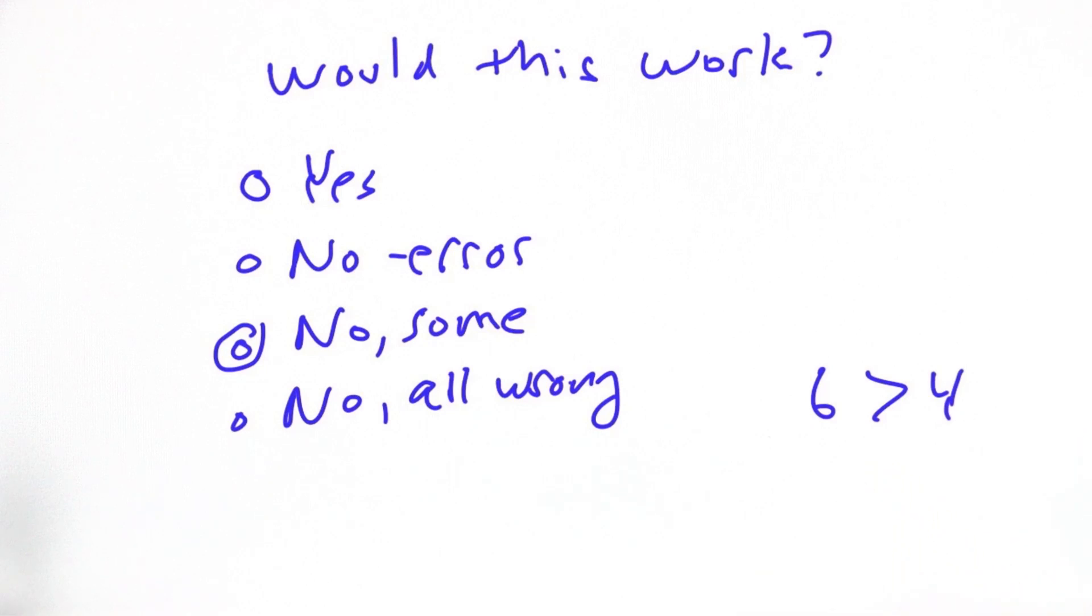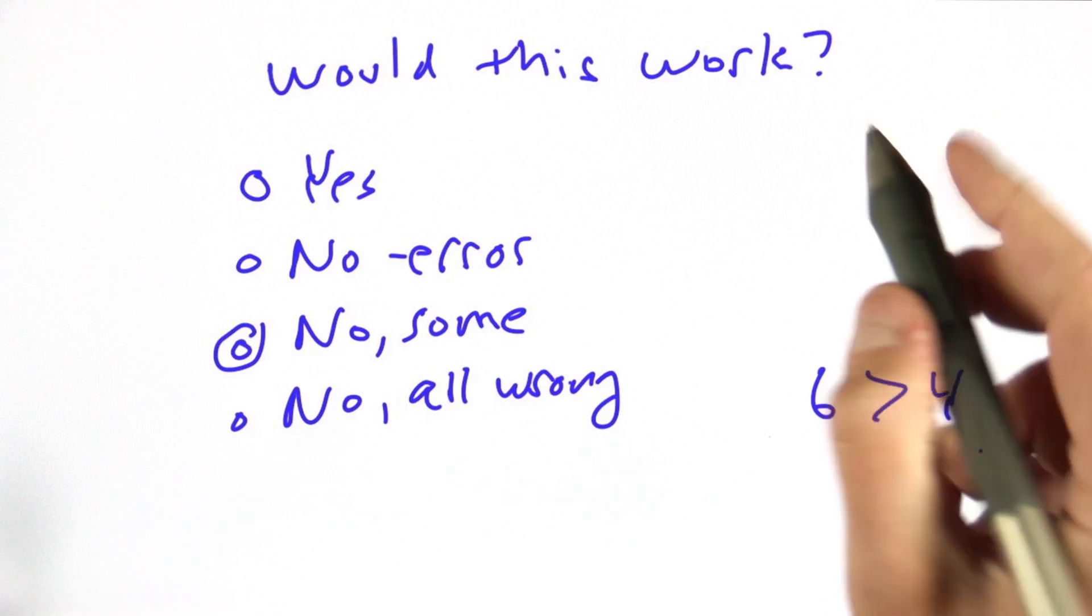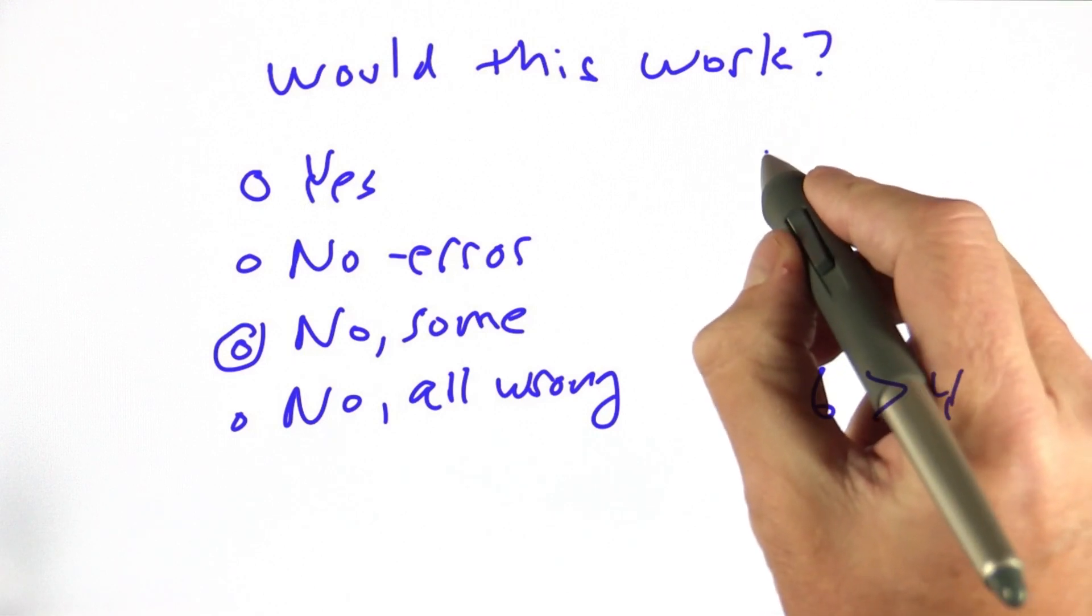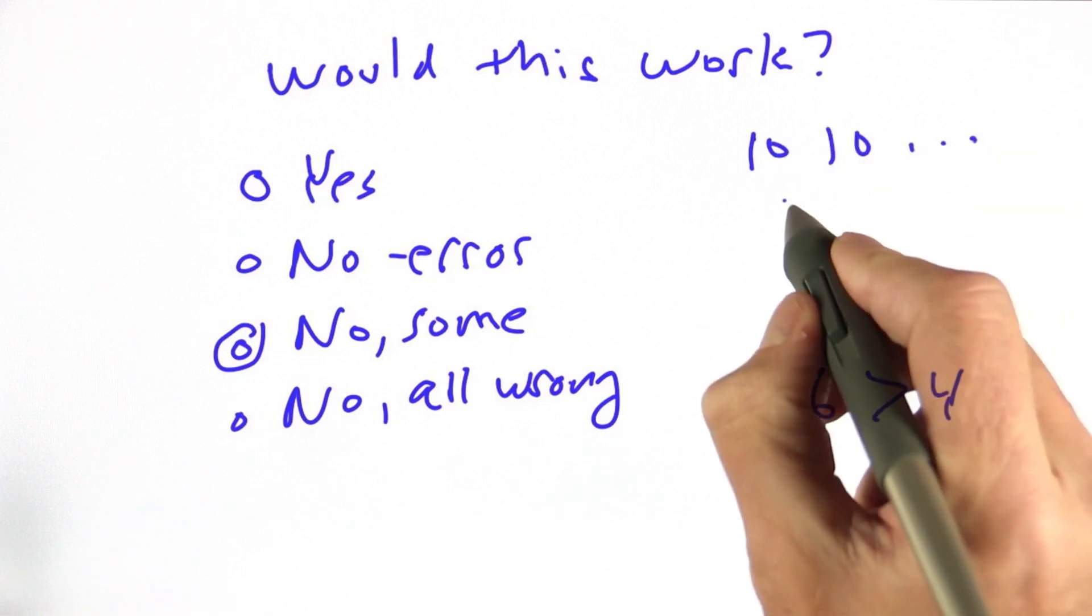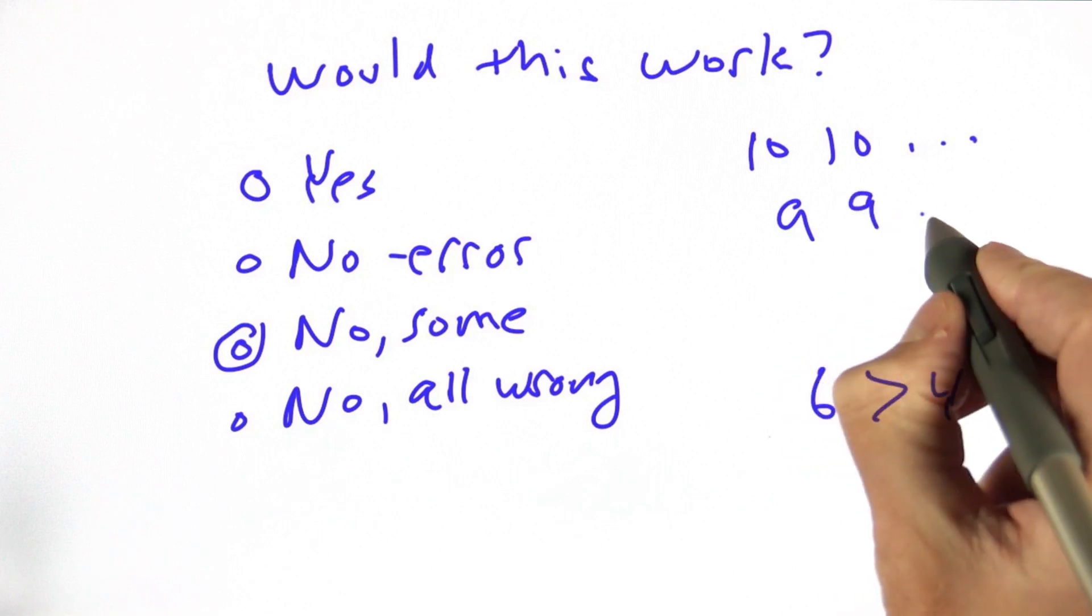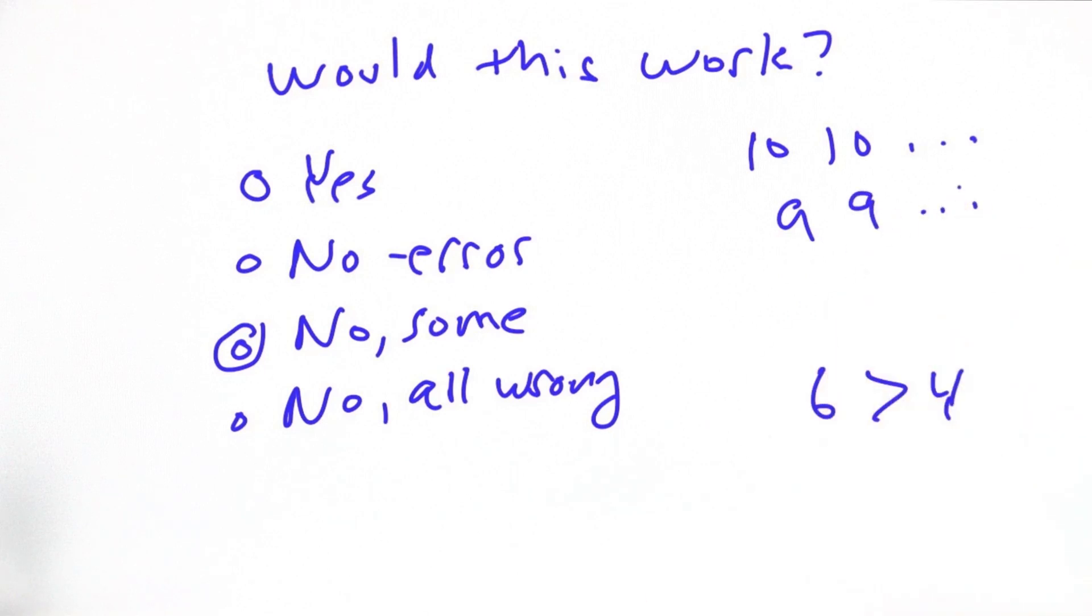But it wouldn't give us the right answer in all cases. So, for example, what happens if somebody had a pair of tens and three other cards and another player had a pair of nines and three other cards.